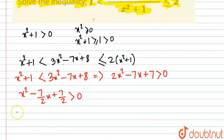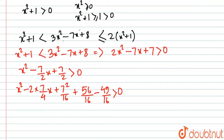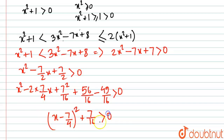Completing the square: x² - 2·(7/4)x + (7/4)² - 49/16 + 56/16 > 0, which simplifies to (x - 7/4)² + 7/16 > 0. This is always true because it is a perfect square plus a positive number, so this inequality holds for all x.